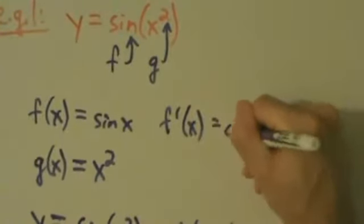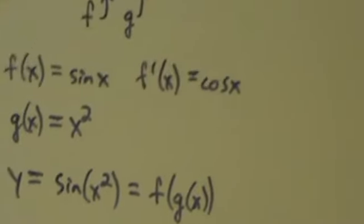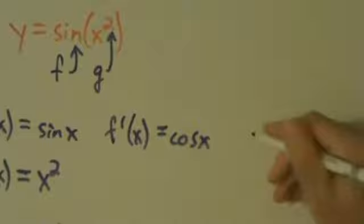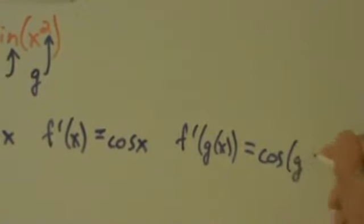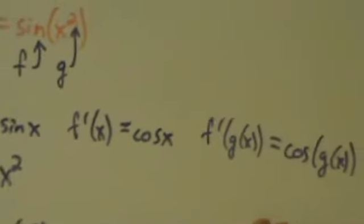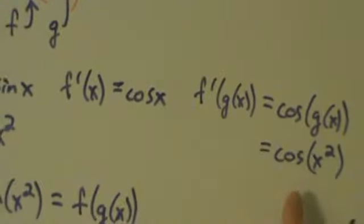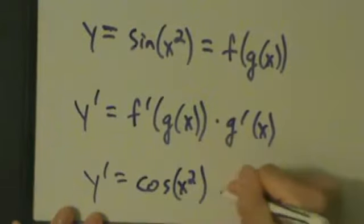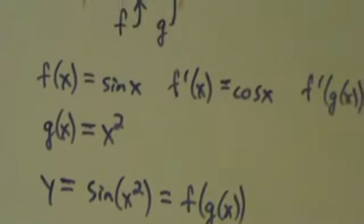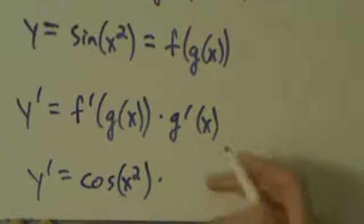f of x is sine of x, so f prime of x is cosine of x. But we don't want f prime of x — we want f prime of g of x. Since f prime of x is cosine of x, f prime of g of x is cosine of g of x. And g of x is x squared, so f prime of g of x is cosine of x squared. Then we multiply by g prime of x. Since g of x is x squared, g prime of x is just 2x. So y prime equals cosine of x squared times 2x.